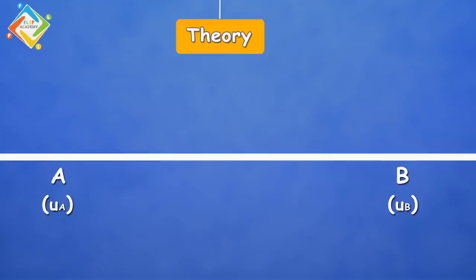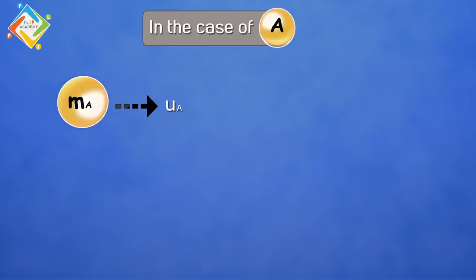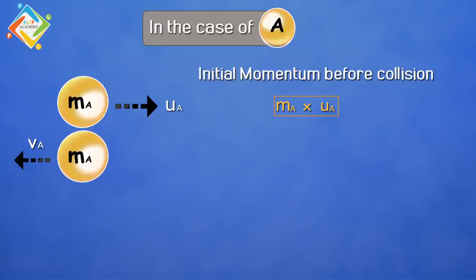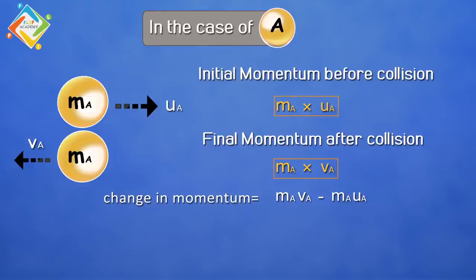To understand it more clearly, let's formulate it. In the case of ball A, the ball moving with initial velocity uA has initial momentum before collision given by mA × uA. After collision, ball A moves with final velocity vA, so the final momentum becomes mA × vA. The change in momentum is therefore mA·vA minus mA·uA, which on taking mA common becomes mA(vA − uA).